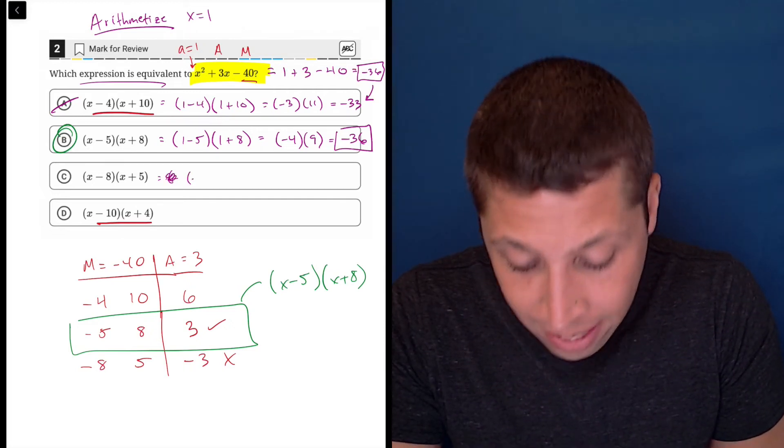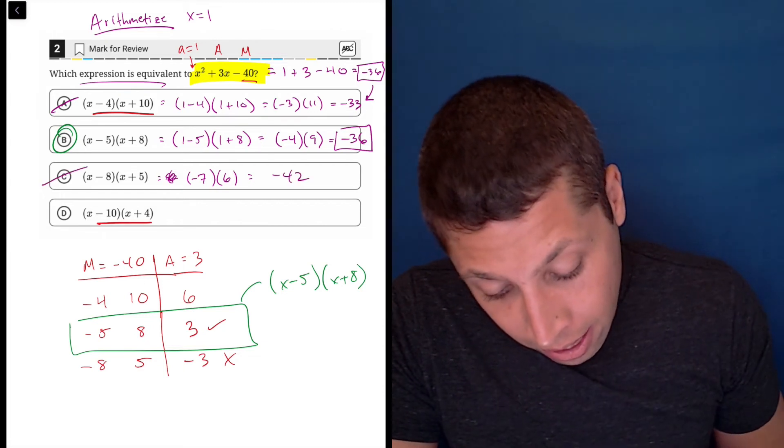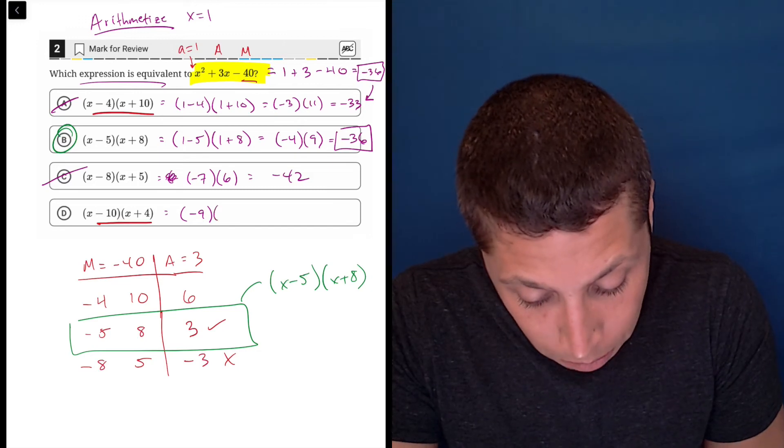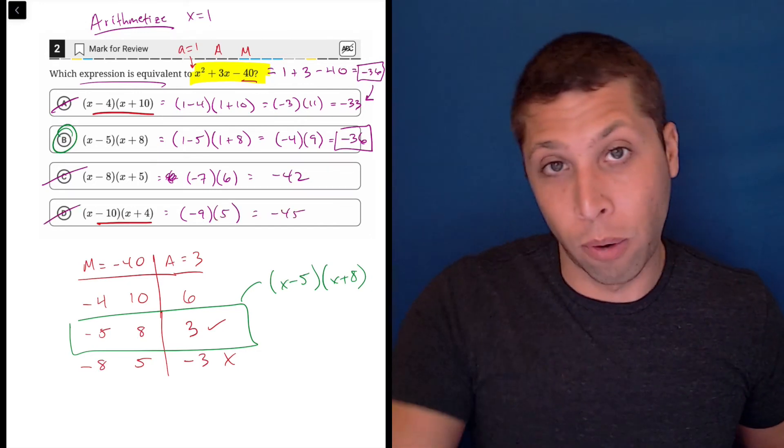One minus eight is negative seven, one plus five is six. So that's negative 42, not negative 36. And one minus 10 is negative nine, one plus four is five. So that would be negative 45, also wrong.